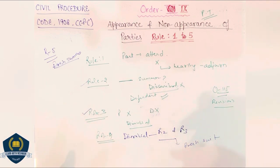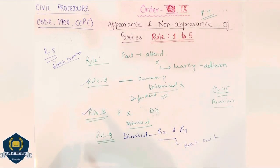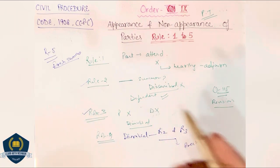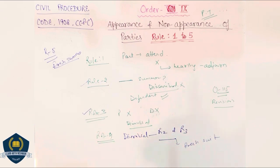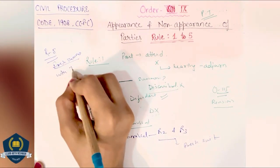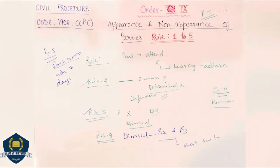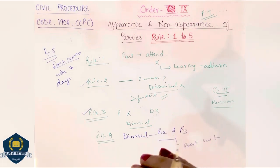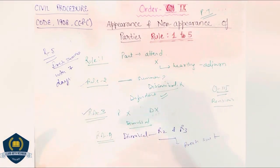Rule 5 का example देखें: plaintiff ने suit file किया, after that office objection, then summons will be issued। Summons issue होते हैं, and then 7 days का time उसको दिया जाता है to file the process fee. Now if summons could not be served and summons has been returned — summons वापस आ जाते हैं, नहीं पहुँचे — once summons was returned, after that plaintiff की duty बनती है that within 7 days from the date जिस दिन summons return होके वापस आया है, he will have to make an application for fresh summons। Within 7 days के अंदर उसको fresh summons की application डालनी पड़ती है, for fresh service he will have to again file a process fee। But if he does not do so, तो suit को dismiss कर सकते हो।